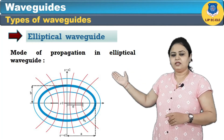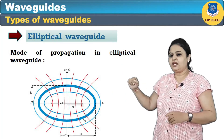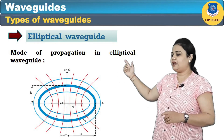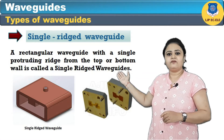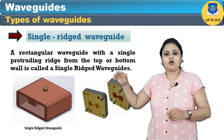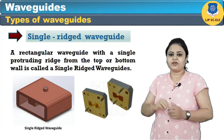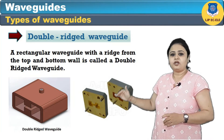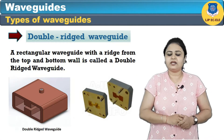The next is the elliptical waveguide, which has a cross section of elliptical shape — here you can see the electromagnetic waves in which the blue line indicates the electric field and the red line indicates the magnetic field. The single ridged waveguide has a single protruding ridge from the top or bottom wall, and the double ridged waveguide has protrusions from both the top and bottom walls.